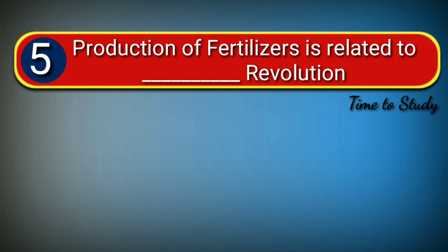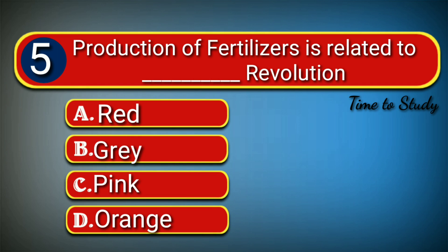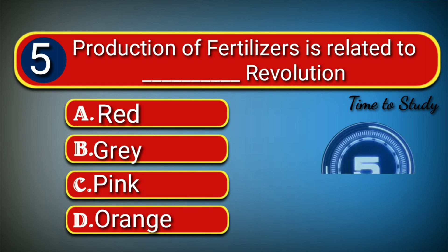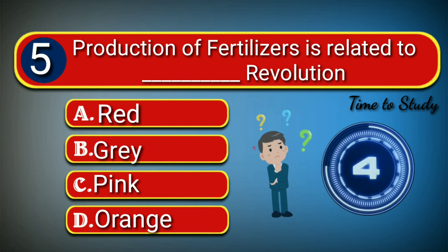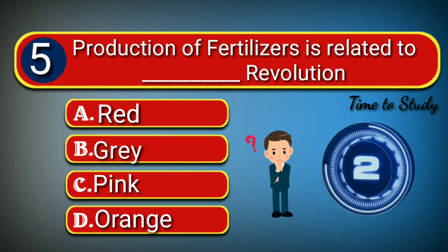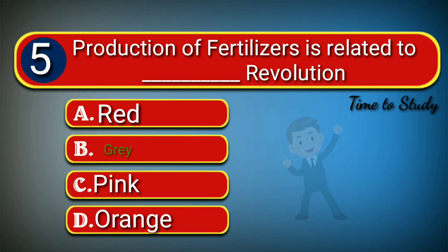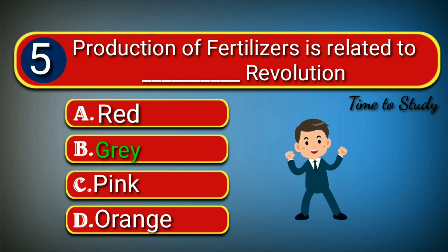Fifth question: Production of fertilizer is related to grey revolution.